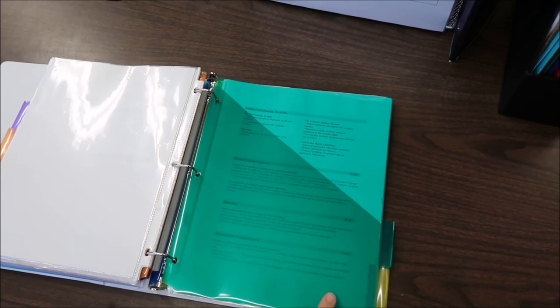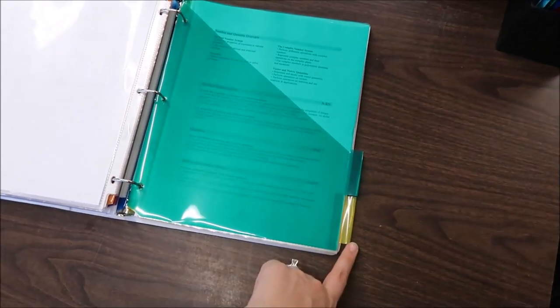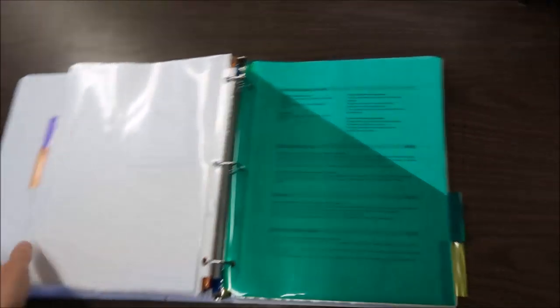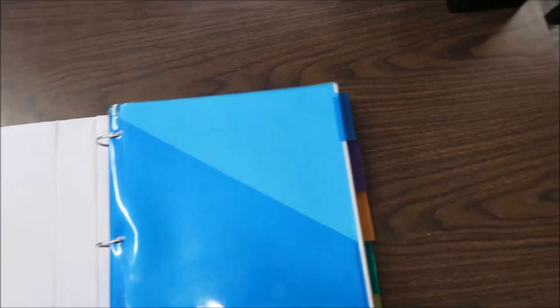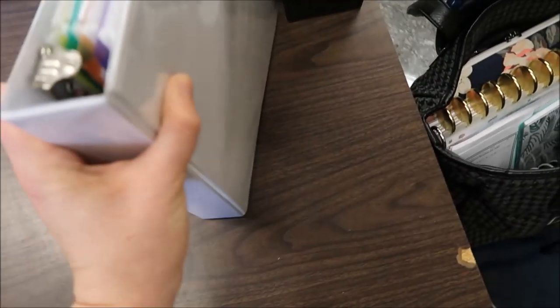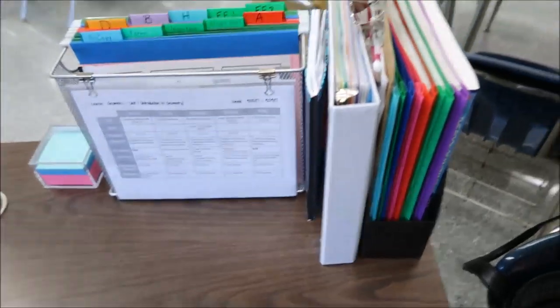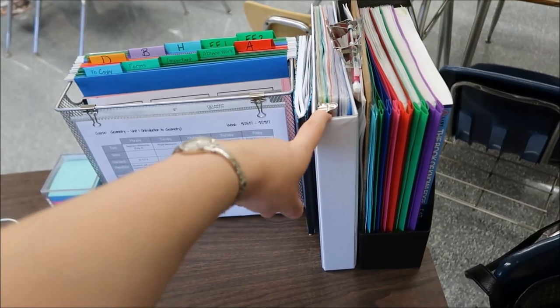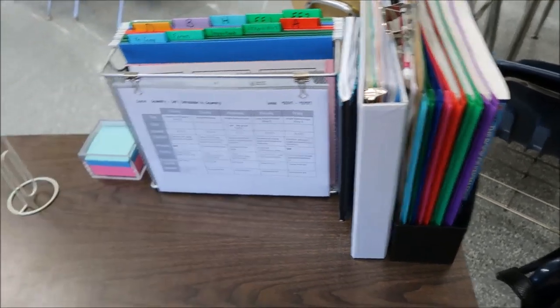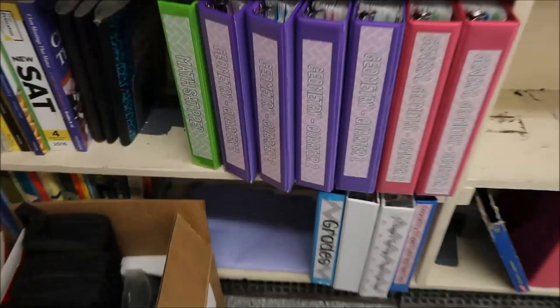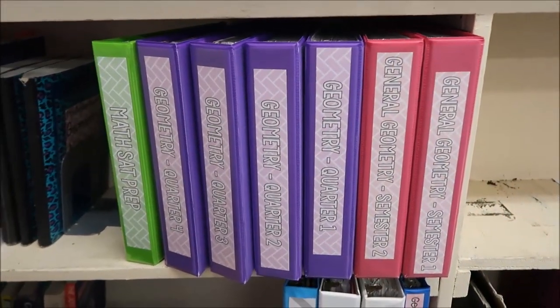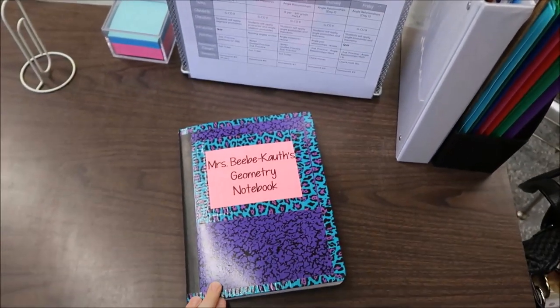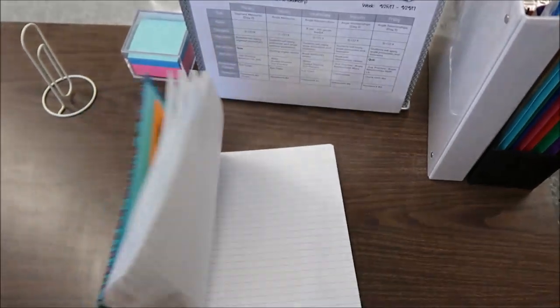In the green section I have a printout of the common core math standards and in the yellow section I'm not going to show it today but it has everything that I need to know about my school. So once I finish my units of study I'll transfer the pages from this binder to these binders here. The next thing I have on the section of my desk is my interactive notebook. So I just keep it right there so it's handy and easy to reference.